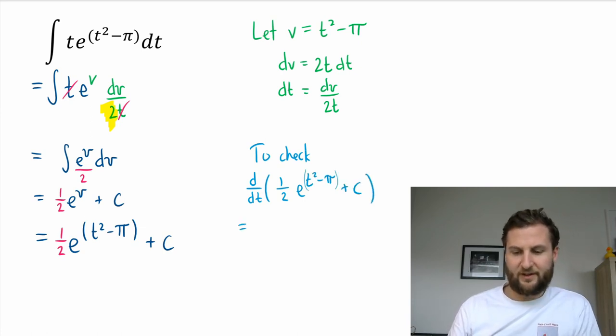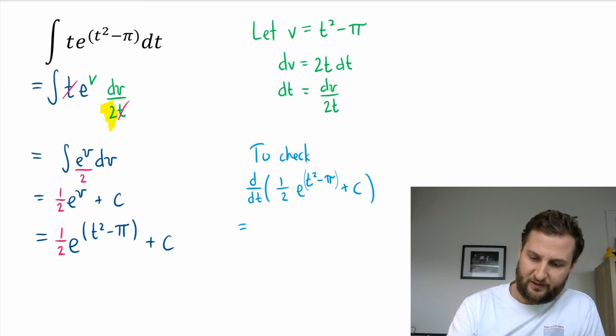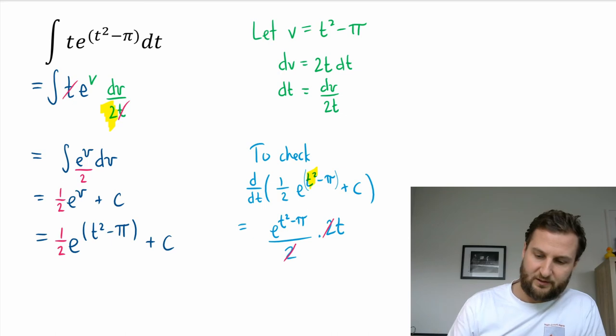Now looking back, if I were to take a derivative here to check, putting this all together for a derivative, I do have a chain rule in the exponent, so that's where I'm going to get that extra 2t from. I'm going to get the same thing, which is e to the t² minus π over 2, and then I have an extra 2t times 2t. My 2's cancel, and I'm left with te to the t² minus π, which is exactly what I was after in the first place.